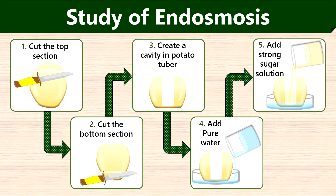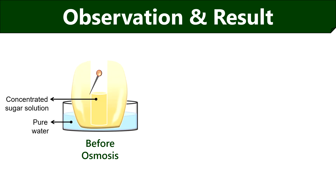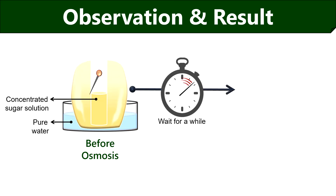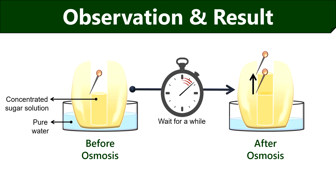After that, add concentrated sugar solution into half of the cavity created in the potato tuber. To conclude the results, insert a pin into the potato tuber to mark the level of the sugar solution. After that, leave the plate undisturbed for some time. After a while, you can see the increase in the level of the sugar solution, as water enters into the cavity of the potato tuber from the surrounding solution — this confirms endosmosis. The movement of water into the cell is due to its low solvent or high solute concentration.